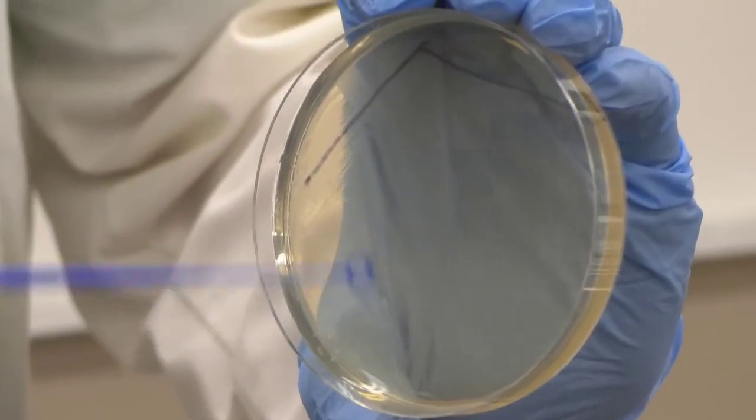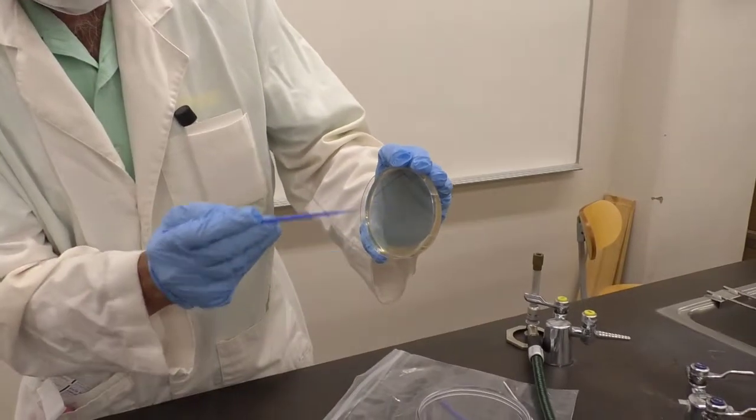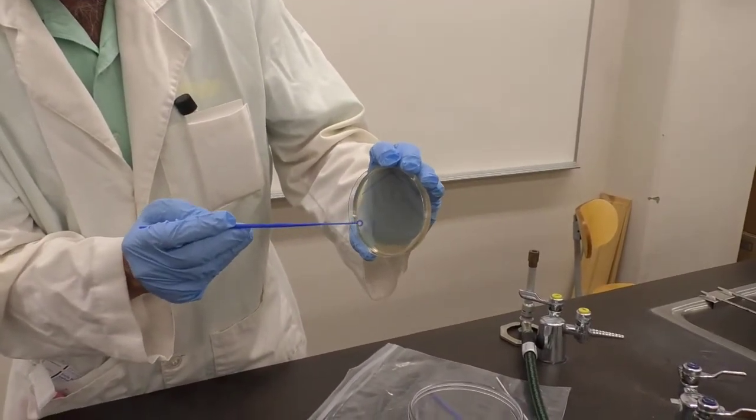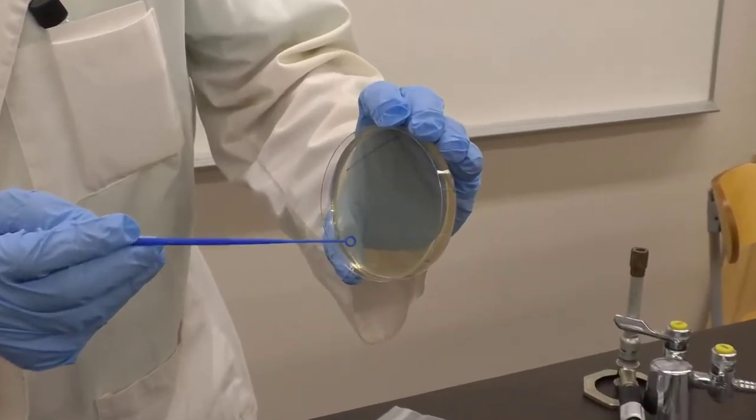Some people might do a fourth but I think a third is going to work. Take advantage of the whole surface of the agar plate. The idea would be to get individual bacteria out of this open area on the plate that will form a colony.